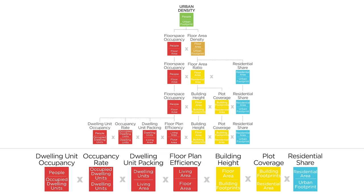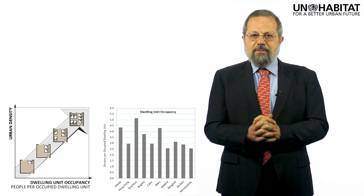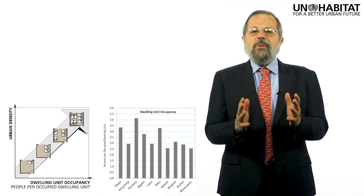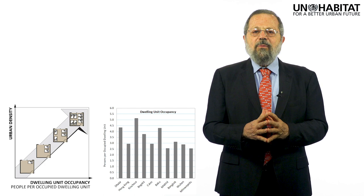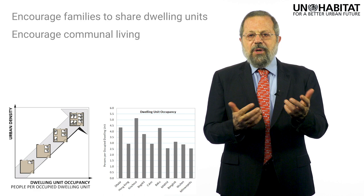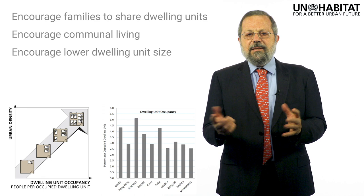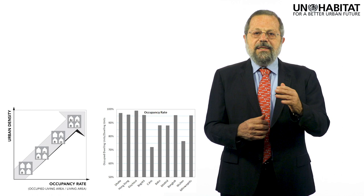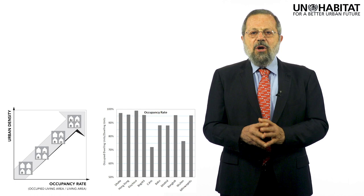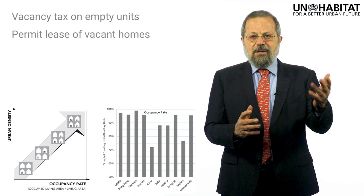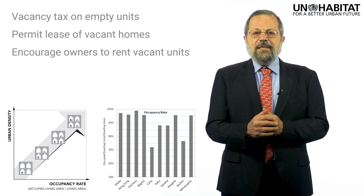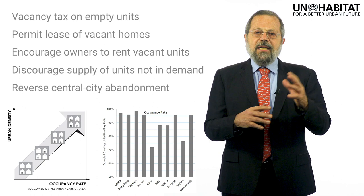We can now see that in order to densify a city, we must increase one or more of these factors while ensuring that others do not decline. This kind of analysis has useful policy implications. We can increase dwelling unit occupancy by increasing the number of people that occupy a single dwelling unit — in times of crisis by forcing families to share units, otherwise by encouraging communal living and larger households, or by encouraging lowering dwelling unit size. We can increase the occupancy rate by removing barriers that keep a larger than necessary share of the housing stock vacant — by introducing a vacancy tax on empty units, permitting the leasing of vacant homes, overcoming owner resistance to renting, discouraging supply of units not in demand, and reversing central city abandonment.